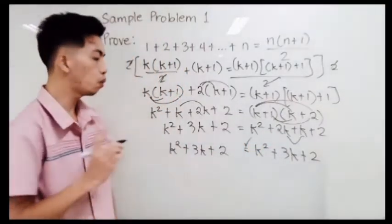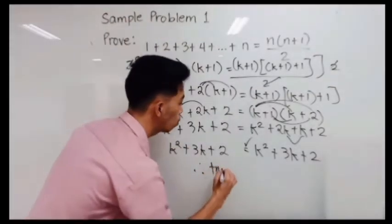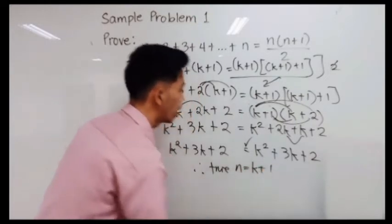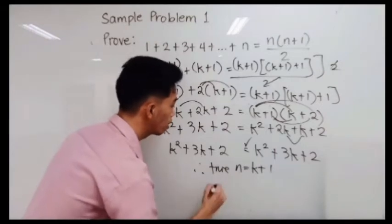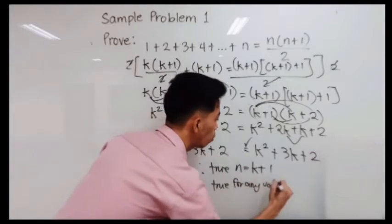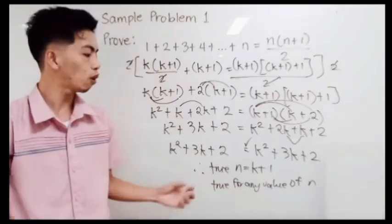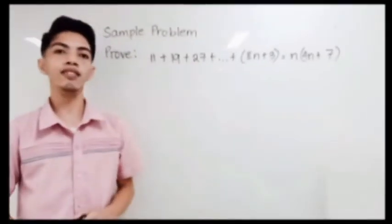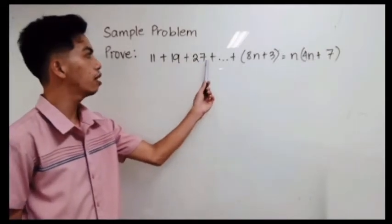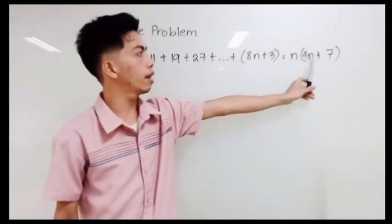Therefore, this statement is true for n equals k plus 1, and thus true for all values of n. Now let us consider sample problem number 2. We have 11 plus 19 plus 27 plus all the way to 8n plus 3, is equal to n times 4n plus 7.